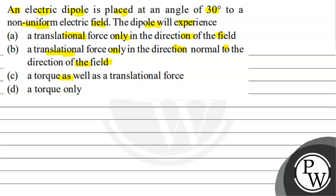Option B, a translational force only in the direction normal to the direction of the field. Option C, a torque as well as a translational force. Option D, a torque only.